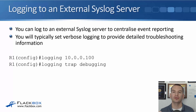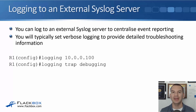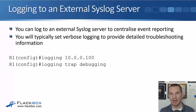You can also log to an external Syslog server. The benefit is that it centralizes event reporting — if you've got 30 routers and switches in your campus you can configure them all to log to the same Syslog server and have one single location for monitoring all logs. If you are using an external Syslog server you'll typically set verbose logging there because you want a lot of information — you're going to log everything so when troubleshooting later you have all the details you need. The configuration at global config is: logging followed by the IP address of the external server, then logging trap and the severity level — typically debugging.